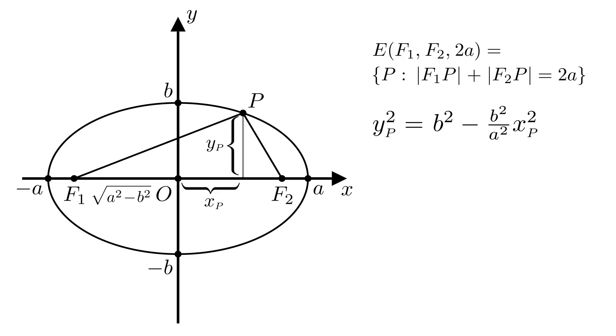We want to calculate |F1P| plus |F2P|. Again we'll use the Pythagorean theorem. So |F1P| squared is equal to the square root of a squared minus b squared plus xP, and all of that squared, plus yP squared. But we already have the expression for yP squared.